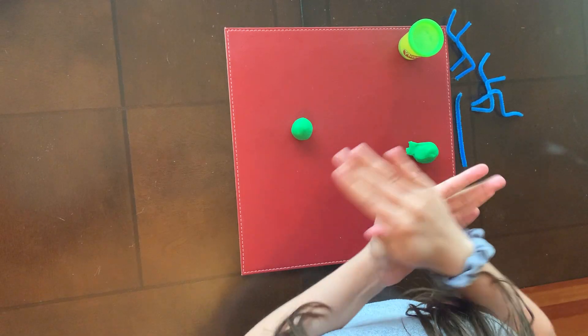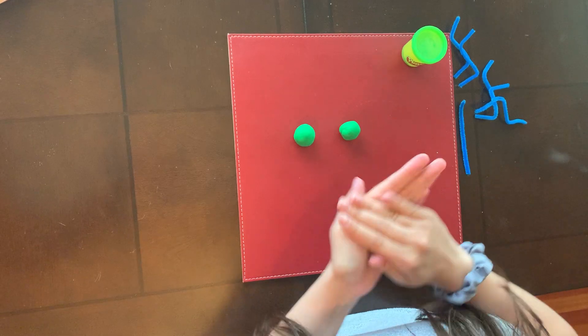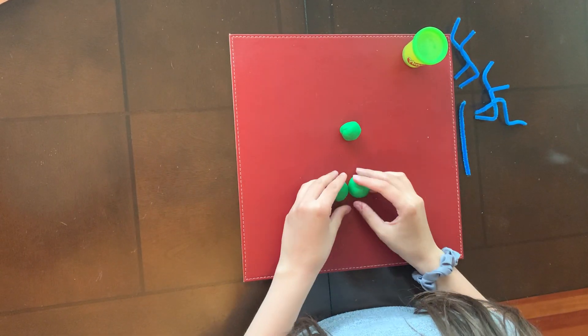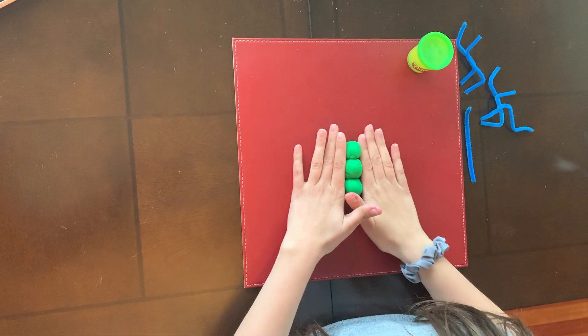So one, two, and three. We're going to stick these together. This is going to be the body of our ant, just like this.